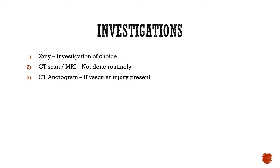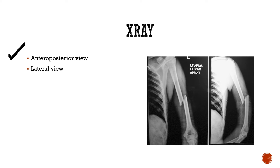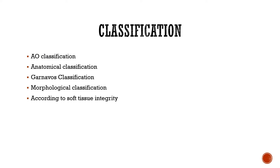For investigations, X-ray is the investigation of choice and diagnoses most shaft humerus fractures using anteroposterior and lateral views. CT scan is done if there is extension of the fracture to the intra-articular surface. MRI is not routinely done. CT angiogram is done if a vascular injury is suspected.